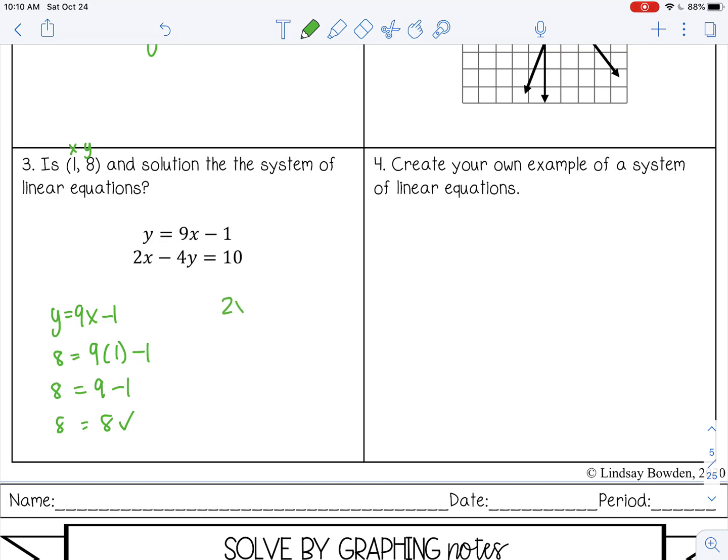So we have to substitute into the second equation as well. Substitute in 1 for x and 8 for y. 2 times 1 is 2, 4 times 8 is 32, 2 minus 32 is negative 30. That does not equal 10, so this is not a solution to the system of linear equations.